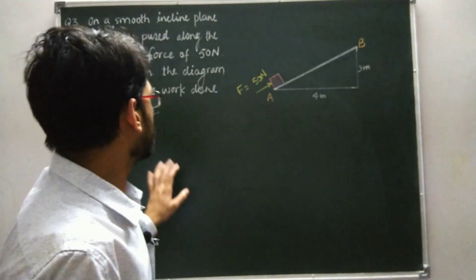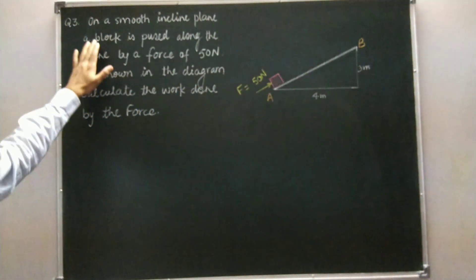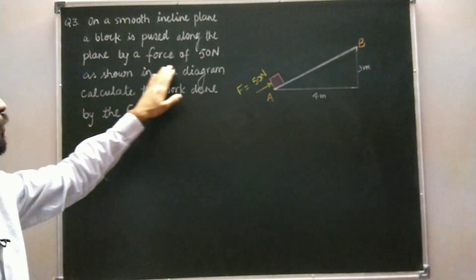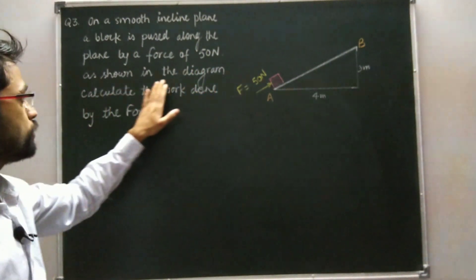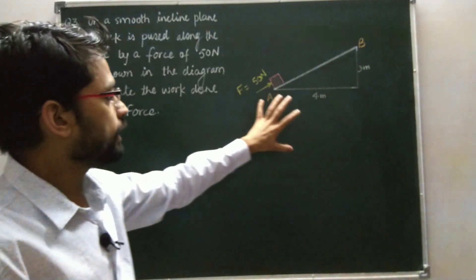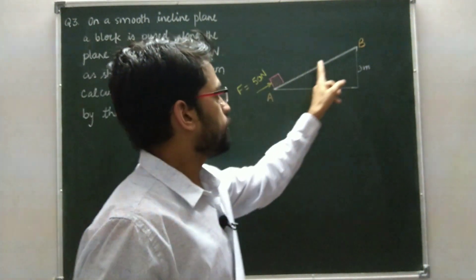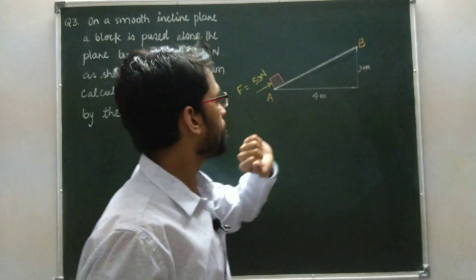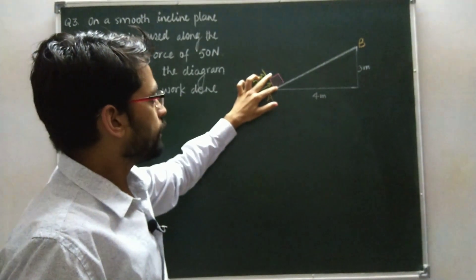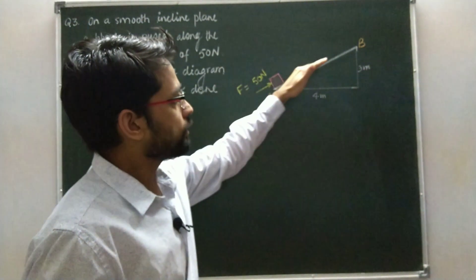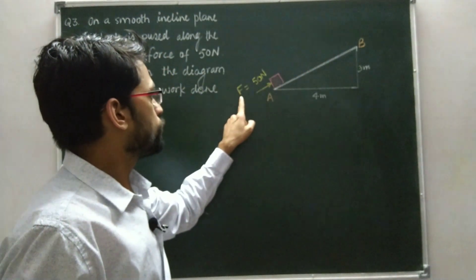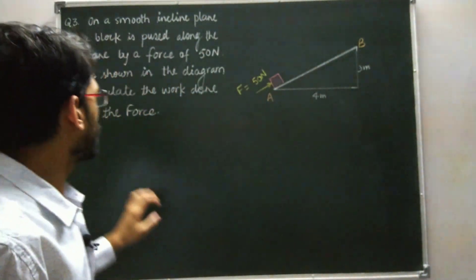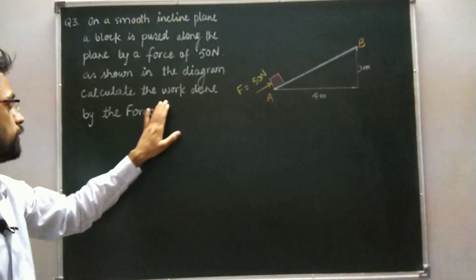Now the next question: on a smooth inclined plane, a block is pushed along the plane by a force of 50 Newton as shown in the diagram. The inclined plane has a base length of 4 meters and height of 3 meters, and the block is pushed from point A to point B. Calculate the work done by this force.